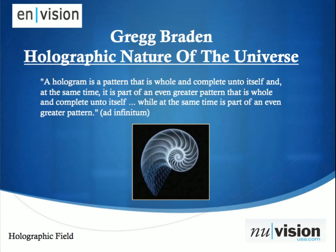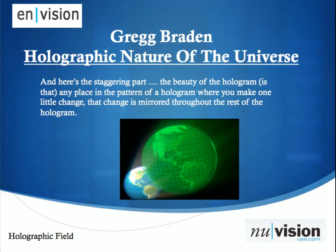Greg Braden describes the holographic nature of the universe: it's a pattern that is whole and complete unto itself, and at the same time it's part of an even greater pattern that's whole and complete unto itself, while at the same time part of an even greater pattern — and this just continues. This is why we chose the representation of the Nautilus, because it's basically repeating itself. The staggering part — and this is Greg Braden's word — is that in any place in the pattern of the hologram where you make one little change, that change is mirrored to the rest of the hologram.